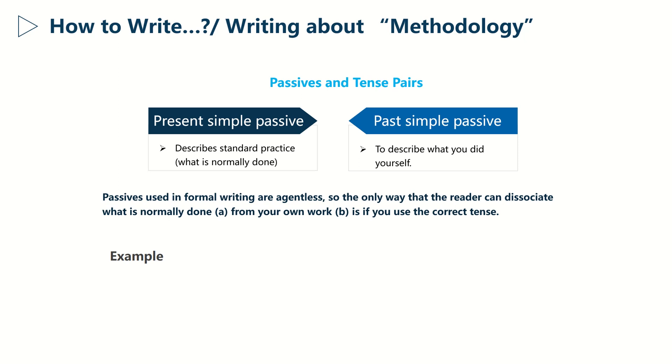Let's make it clear with this example. A: The solution A is mixed with the solution B. B: The solution A was mixed with the solution B. You can see that in A I'm describing a standard practice, while in B I'm telling the reader what I did myself.